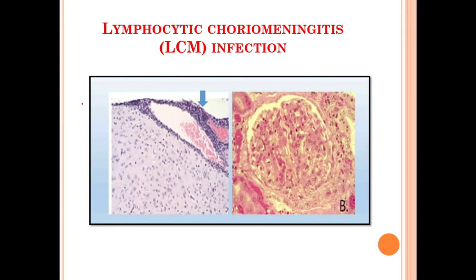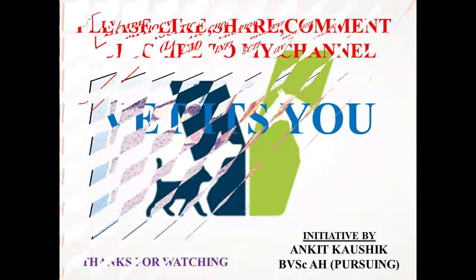These are the microscopic slides prepared from samples taken from animals infected with lymphocytic choriomeningitis infection. In both pictures, you can see infiltration of lymphocytes in organs like the kidney.